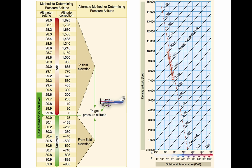Density altitude is used in calculating aircraft performance. It is determined by first finding pressure altitude and then correcting this altitude for non-standard temperature variations. Since density varies directly with pressure and inversely with temperature, a given pressure altitude may exist for a wide range of temperatures. The density of the air has a pronounced effect on aircraft and engine performance. Regardless of the actual altitude at which the aircraft is operating, it will perform as though it were operating at an altitude equal to the existing density altitude. Air density is affected by changes in altitude, temperature, and humidity. High density altitude refers to thin air, while low density altitude refers to dense air.